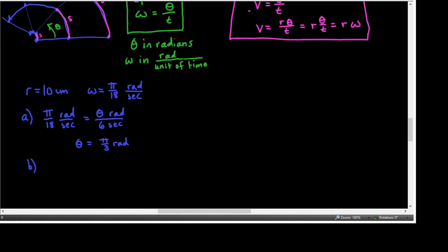Part b: find the distance s traveled by P along the circle in 6 seconds. We're still at 6 seconds, so we use theta equals pi over 3 radians from part a. Using s equals r theta: s equals 10 centimeters times pi over 3, giving an exact answer of 10 pi over 3 centimeters.